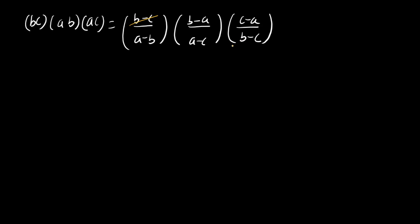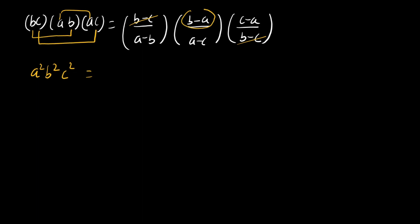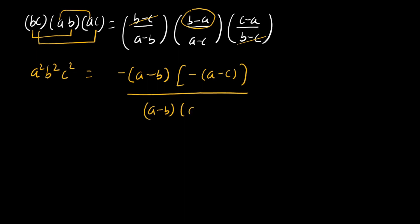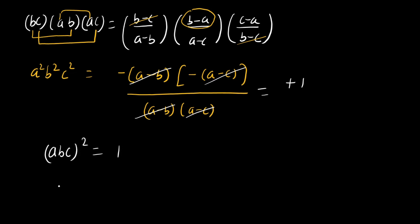The b minus c terms cancel out. On the left hand side, b times b gives b squared, a times a gives a squared, and c times c gives c squared. On the right hand side, b minus a equals negative (a minus b), and taking negative sign common from another factor gives negative (a minus c). The a minus b terms cancel and the a minus c terms cancel, leaving negative times negative which equals positive 1. Since a squared b squared c squared equals (abc) squared, and this equals 1, the value of abc equals plus or minus 1. This is our final answer.